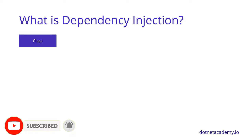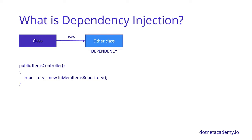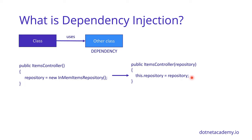In a previous video, we created our entities, repositories, and controller to get items and a specific item. However, we found an issue when trying to retrieve one item — because anytime we receive a request in our controller, we're creating a new instance of the repository, bringing in a brand new set of items. So we're never able to find the item. How can we fix this the right way? There's a pretty important concept called dependency injection.